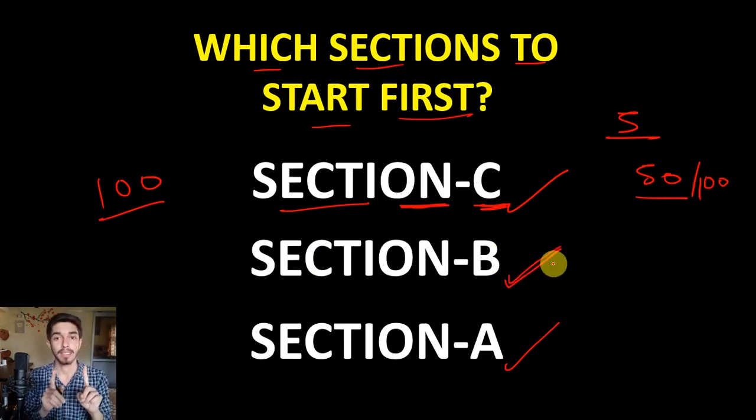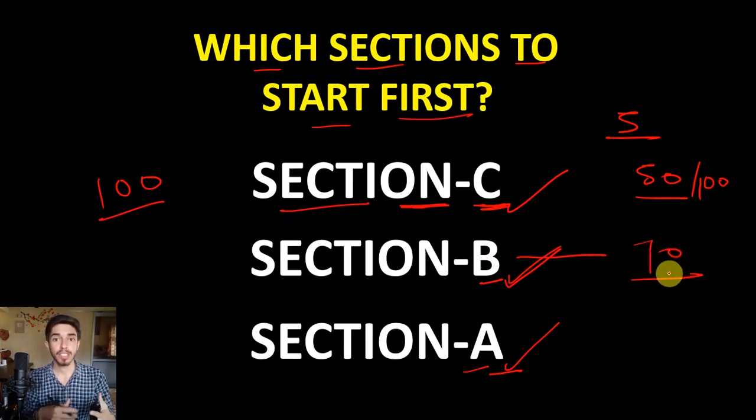Then you will attempt Section B. Why Section B not A? Because Section A is of general aptitude, and the questions look easy, but once you start attempting them you will find it confusing. There will always be something inside of you telling you 'I can do that question' and you will stick with that one question and waste a lot of time. So that's why attempt Section B first and Section A last.